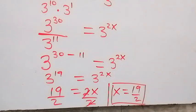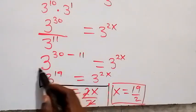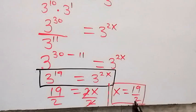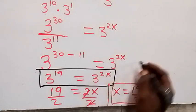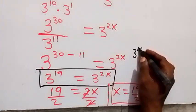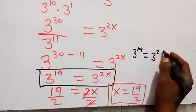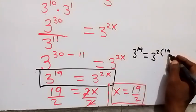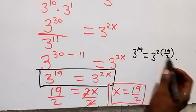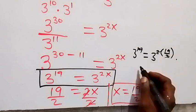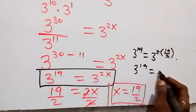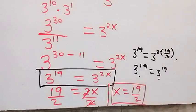We can check to confirm if this solution satisfies the given problem. We have simplified the problem to the point where we now put x equals 19 over 2. From 3 raised to power 19 equals 3 raised to power 2 times 19 over 2 — the 2s cancel — and this is 3 raised to power 19, which equals 3 raised to power 19. It confirms that the left hand side equals the right hand side, and therefore x equals 19 over 2 is the solution to this problem.